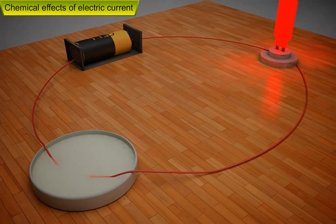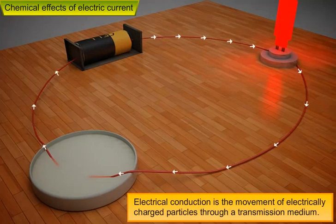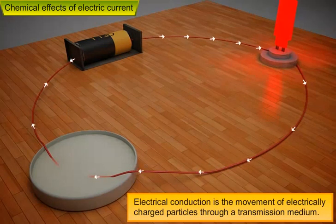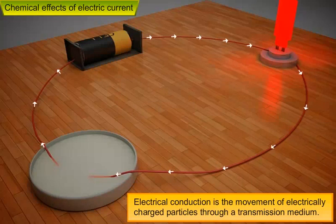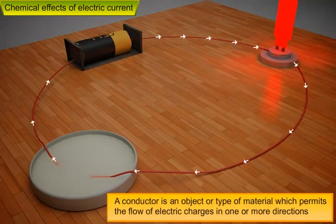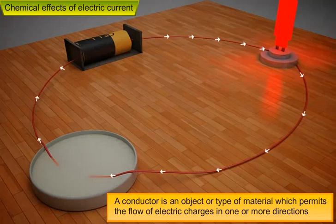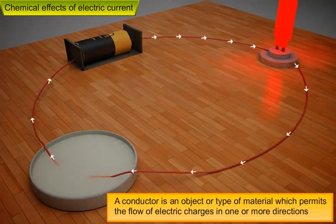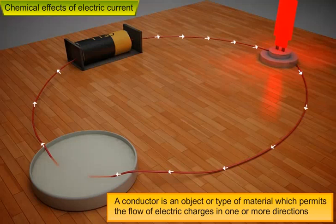First, let us understand what is electrical conduction. Electrical conduction is the movement of electrically charged particles through a transmission medium. A conductor is an object or type of material which permits the flow of electric charges in one or more directions.